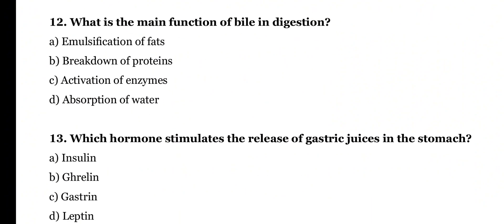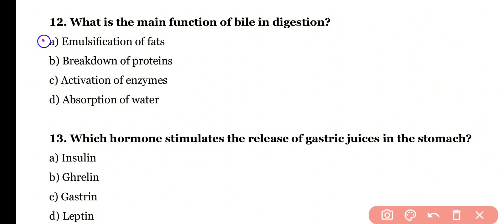Question 12. What is the main function of bile in digestion? Emulsification of fats, breakdown of proteins, activation of enzymes, or absorption of water? Correct answer is option A. Bile is stored in the gallbladder; the liver produces it and it mainly helps in the emulsification of fats within the small intestine.